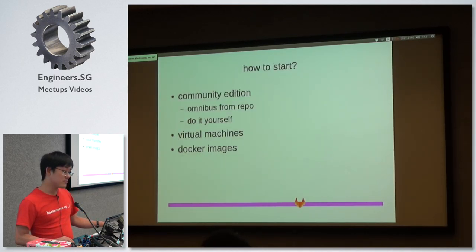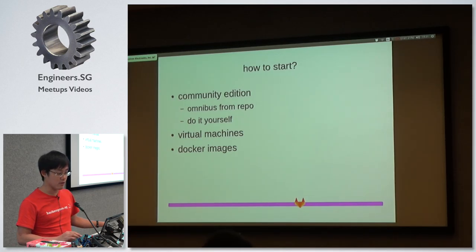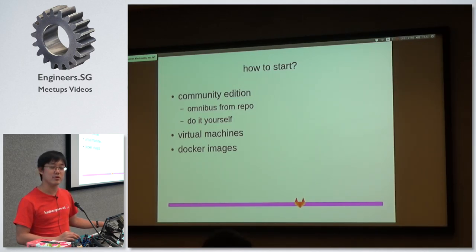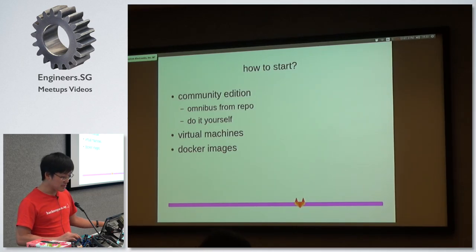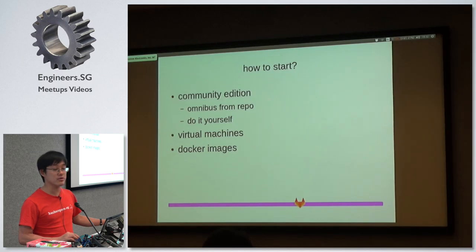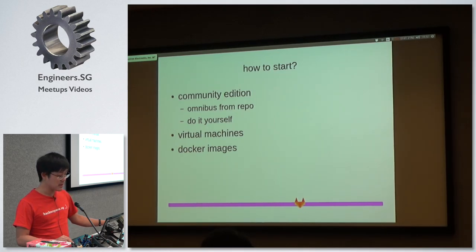GitLab gives you the community edition where you can, for Ubuntu's case, do apt-get install after adding the repo. Or you can download the tarball and try to do everything yourself, which — being strapped for time — I thought was the better solution, and I ended up being a lot more strapped for time. So don't do it yourself. There are virtual machines pre-configured for GitLab that you can use, and there are also Docker images, but we are kind of far down the tech chain to explore Docker at that point.